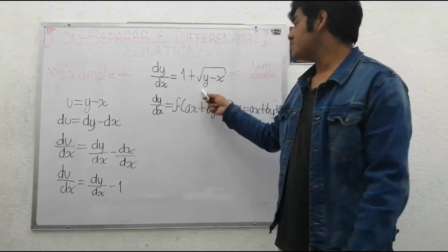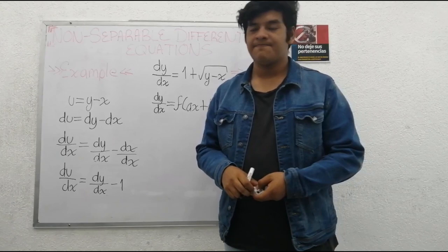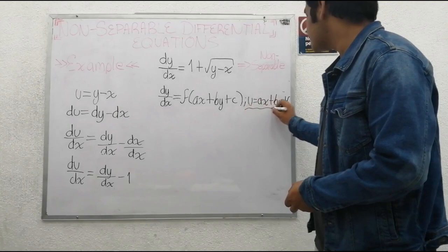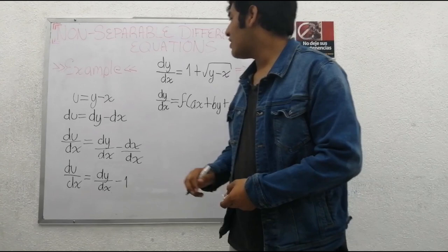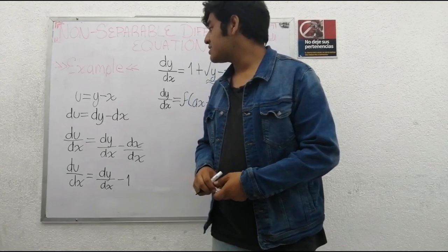Then, to solve an equation like this, we propose a change of variable, trying to make the equation linear. In this case, we propose u equals y minus x.